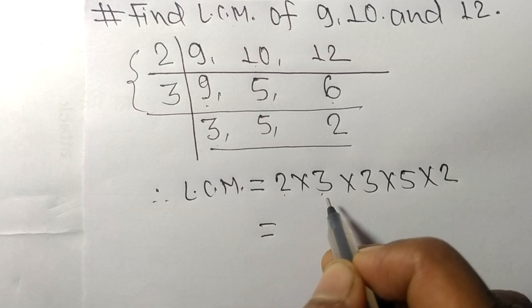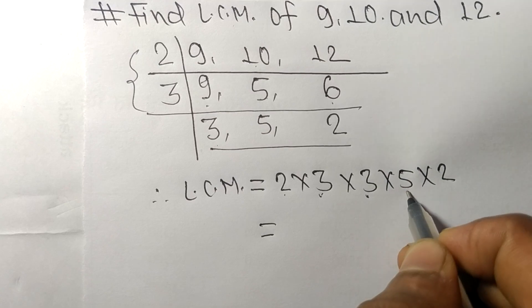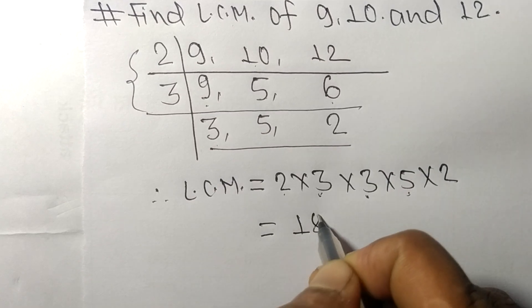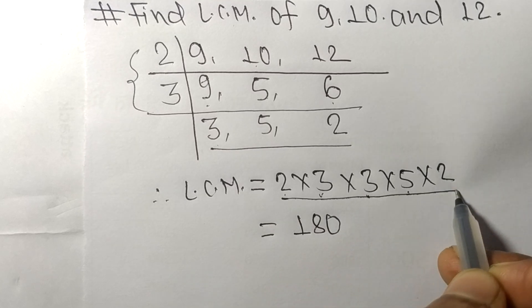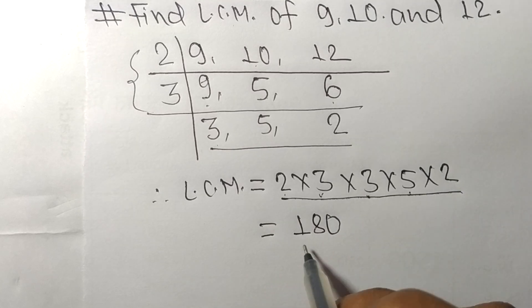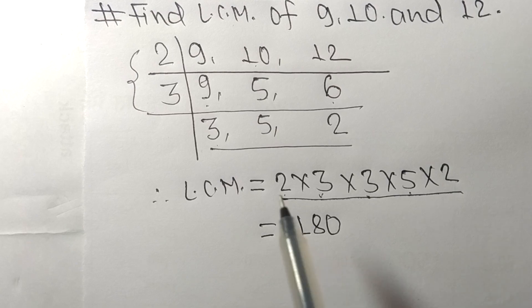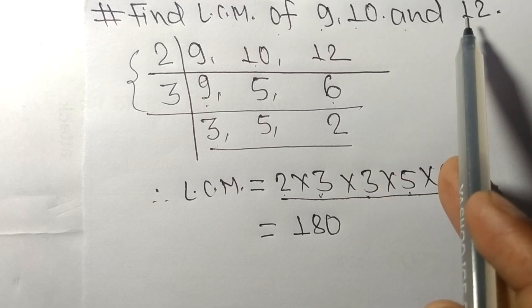2 times 3 equals 6, 6 times 3 equals 18, 18 times 5 equals 90, 90 times 2 equals 180. So by multiplying all these numbers we got 180. So 180 is the LCM of 9, 10, and 12.